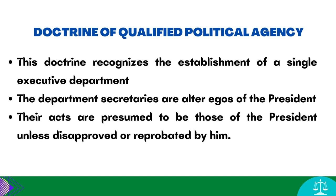The Doctrine of Qualified Political Agency recognizes the establishment of a single executive department. All department heads are alter egos of the President, and except in cases where the chief executive is required by the Constitution or law to act in person or the exigencies of the situation demand personal action, the multifarious executive and administrative functions are performed by and through the executive departments. The acts of the secretaries of such departments, performed and promulgated in the regular course of business, are — unless disapproved or reprobated by the chief executive — presumptively the acts of the chief executive.